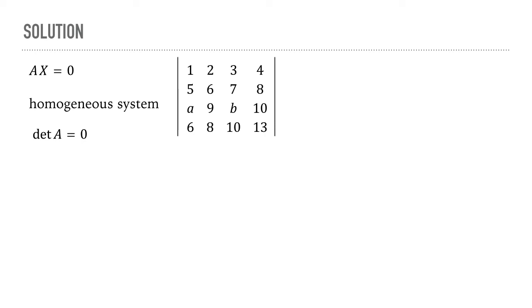Now applying properties of determinants we can transform this determinant into this one. So we have applied the transformation row 2 gets transformed into row 2 minus row 1.